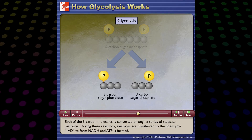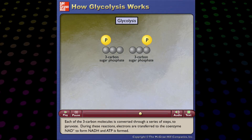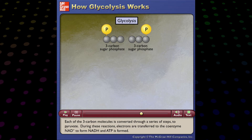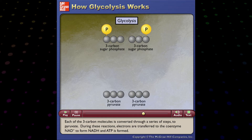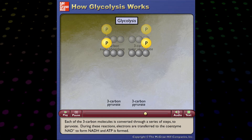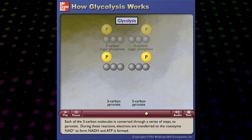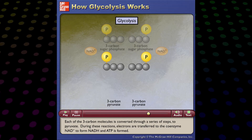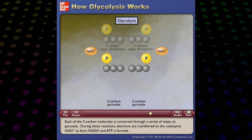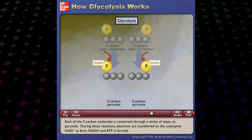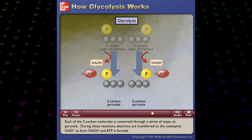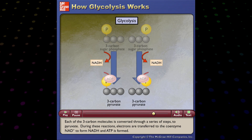Each of the three-carbon molecules is converted through a series of steps to pyruvate. During these reactions, electrons are transferred to the coenzyme NAD+ to form NADH, and ATP is formed.